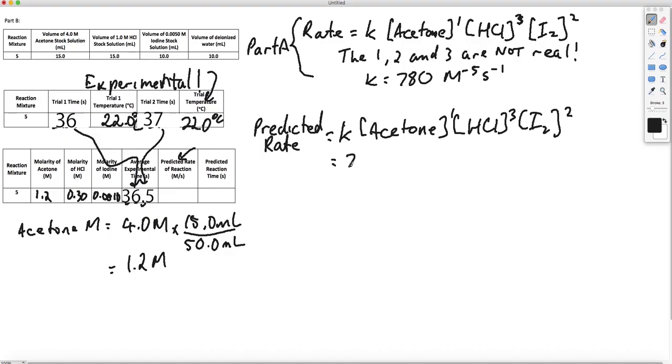We're going to substitute in the values we got from Part A. That's 780 M to the negative 5 S to the negative 1 for K. The acetone is 1.2 M to the 1, HCl is 0.30 M to the 3, and 0.0010 M to the 1. The predicted rate then is 2.5 times 10 to the negative 5 molar per second. All the molarities cancel. We'll be left with M here and per second for the S to the negative 1.